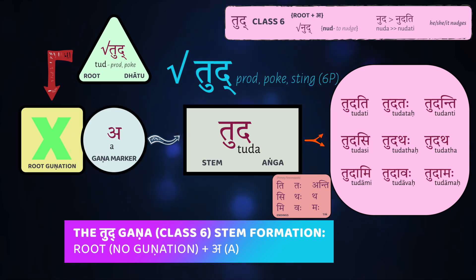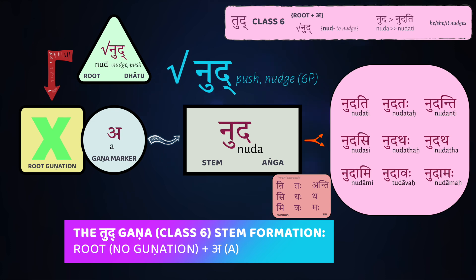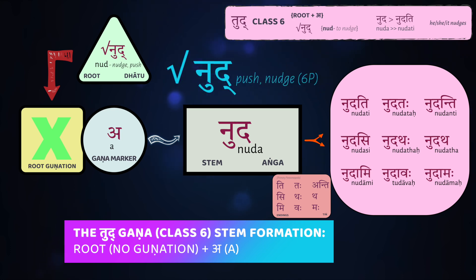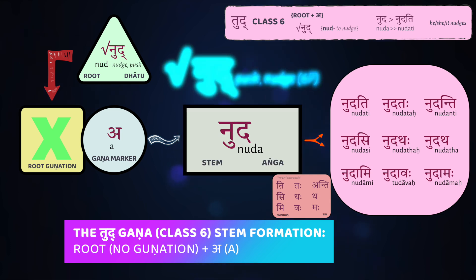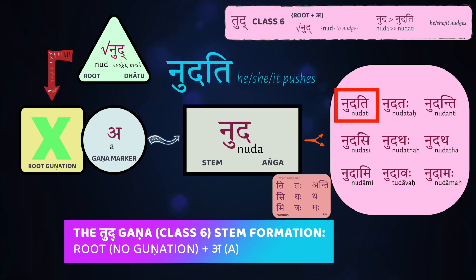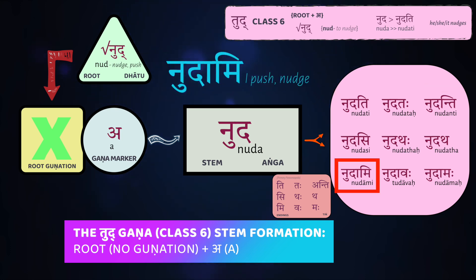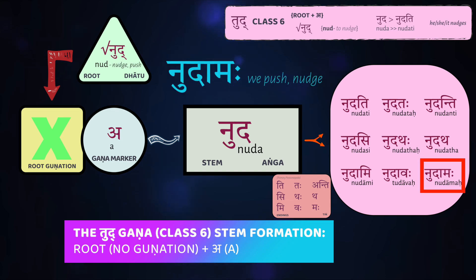Wish we could all be sixth class verbs, but I'm afraid not — it gets complicated from here. Aside from tudd — to poke, sting, or strike — we also have nudh, which means to push or nudge. This turns into the stem nudha, and we get nudh-ati: he pushes, she nudges, they push or nudge, I nudge you, we nudge.